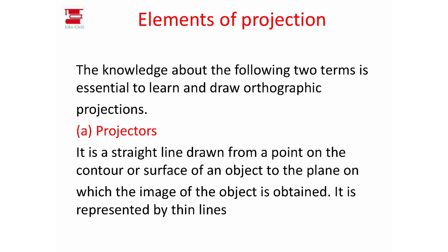We are going to talk about the object in a plane — the surface of the plane, the straight lines of the object in the surface. The object is in the surface, and that is in the contour and straight lines.